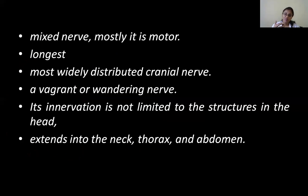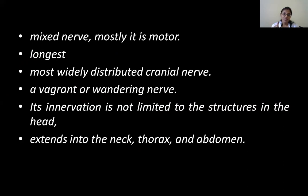The vagus is a mixed nerve, just like the glossopharyngeal. In the glossopharyngeal, if you cut and see, there are more sensory fibers — assume eight are sensory and two are motor. The reverse is true for the vagus, so the vagus is mostly motor and it is the longest cranial nerve. It supplies thoracic and abdominal viscera, making it a widely distributed and vagrant nerve.